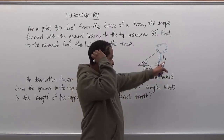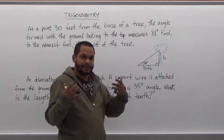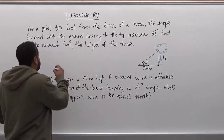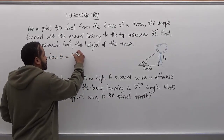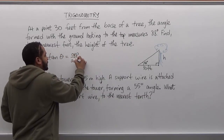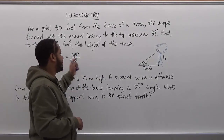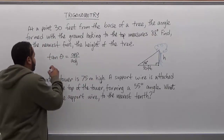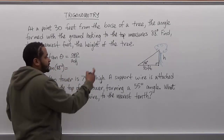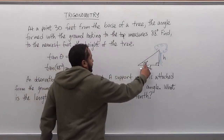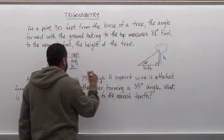What we have here is the opposite and the adjacent side formed with an angle. From SOHCAHTOA we can use the tangent: the tangent of the angle is equivalent to the opposite side over the adjacent side. So our equation is: tangent of 88 degrees equals h over 30 feet.